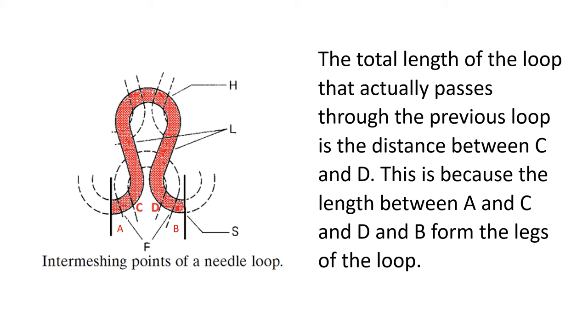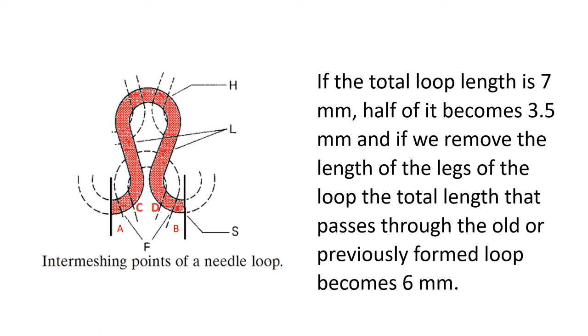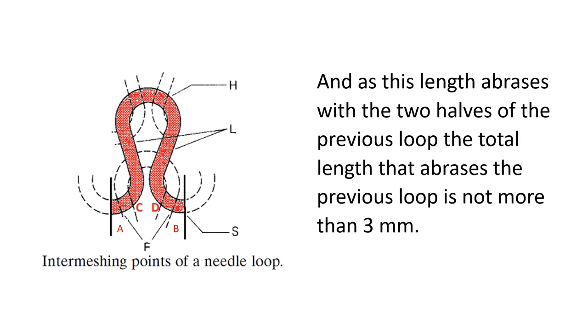This is because the length between A and C and D and B form the legs of the loop. This length of the legs of the loop, though can be calculated using geometrical formulas, but in our study we can safely assume this length to be half a millimeter. If the total loop length is 7 millimeters, half of it becomes 3.5 millimeters, and if we remove the length of the legs of the loop, the total length that passes through the old or previously formed loop becomes 6 millimeters. And as this length abrades with the two halves of the previous loop, the total length that abrades the previous loop is not more than 3 millimeters.